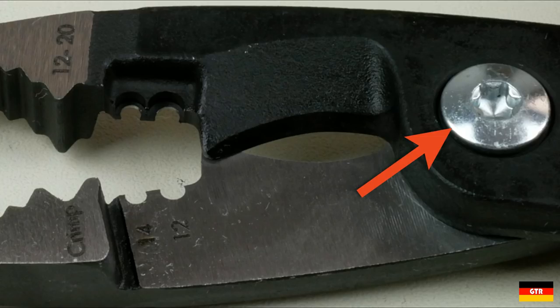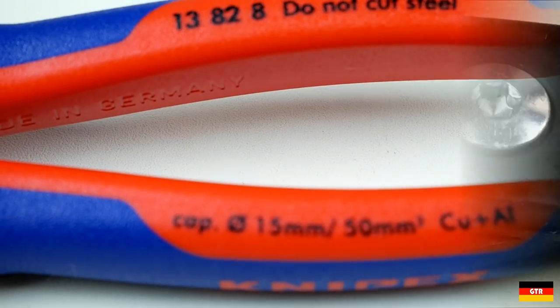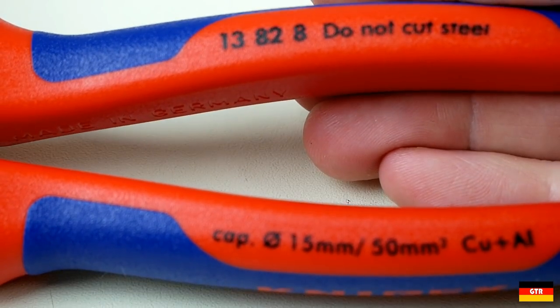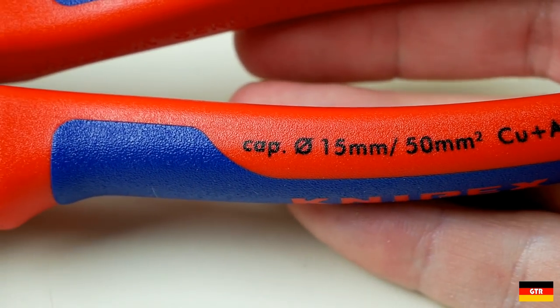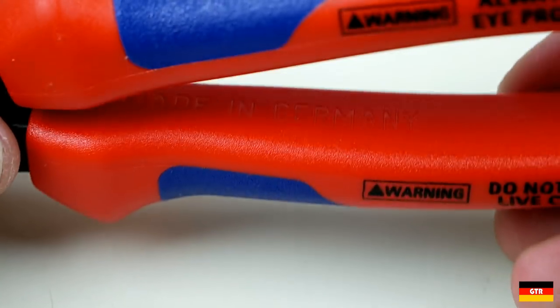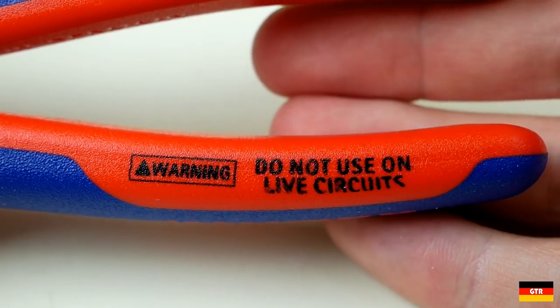This particular model pliers uses a bolted joint with a torx screw that can be adjusted in the future if it ever becomes loose. The unit I picked up contains the two component handles. As noted on the handles these pliers are not intended for hard metals such as steel and really should only be used on copper and aluminum.